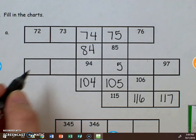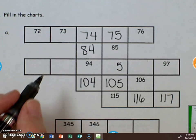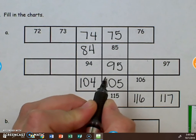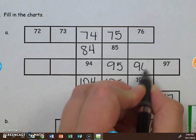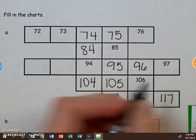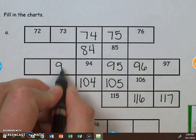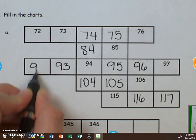We can finish up filling in this row right here. We have 94. We know that what comes after that is 95, 96 followed by 97. We then can count backwards: 94, 93, 92.